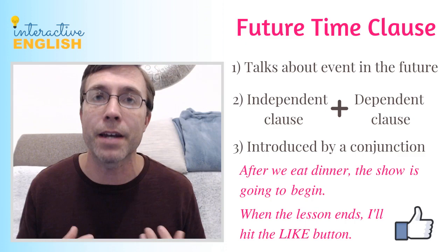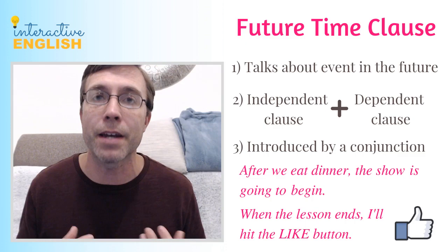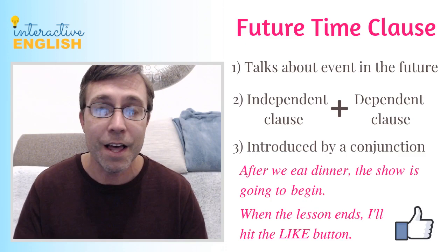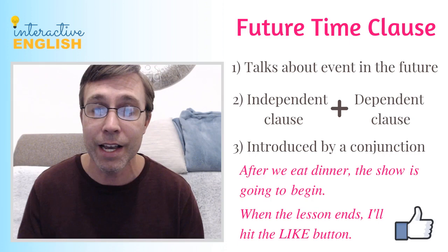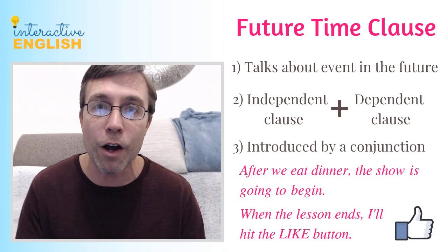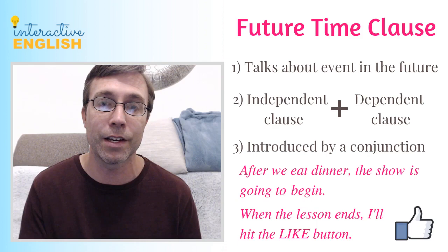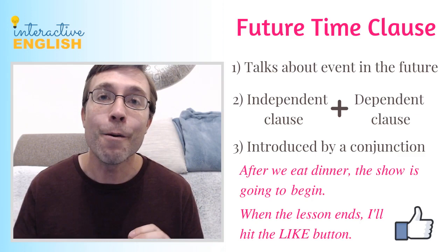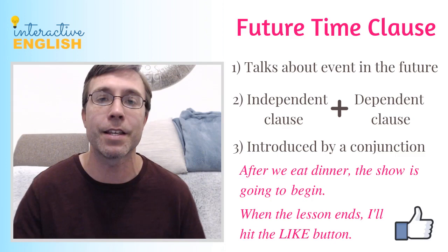The one important thing to know is that an independent clause has a subject and a verb. That main verb in the independent clause determines when the action is taking place — past, present, or future. So in the independent clause, that is where you use the future tense. In the dependent clause, introduced by conjunctions like after, before, when, while, you use the present simple.